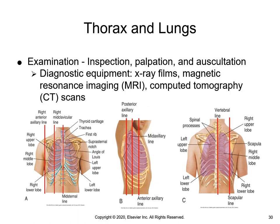The normal chest contour is symmetrical with the anterior-posterior diameter one-third to one-half of the transverse or side-to-side diameter. The normal spine is straight without lateral deviation. Routinely, there is no bulging or active movement within the intercostal spaces during breathing. Bulging of the intercostal spaces indicates that a patient is using great effort to breathe. The images show anterior, lateral, and posterior views of the lung structures and ribcage.